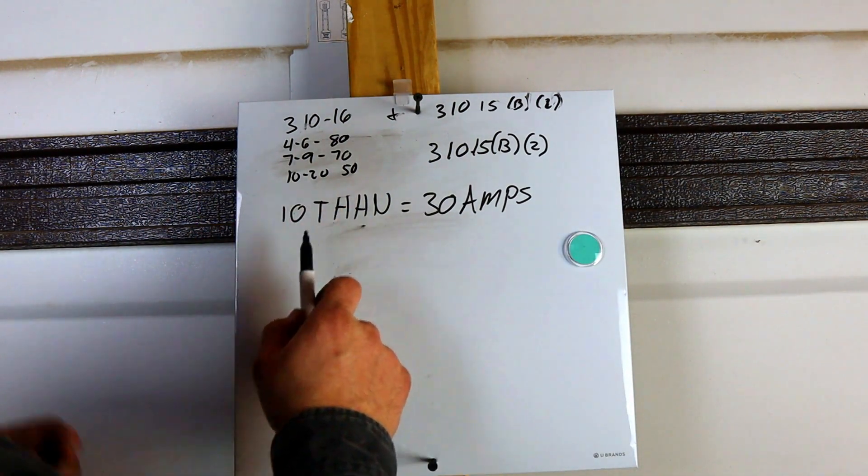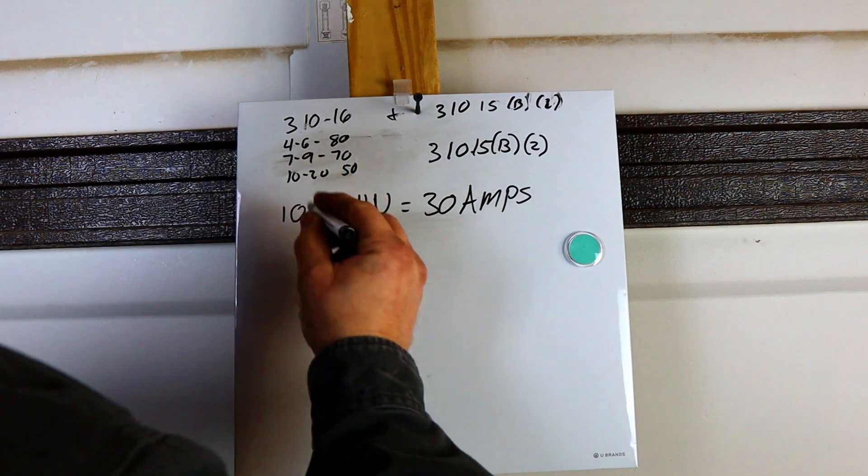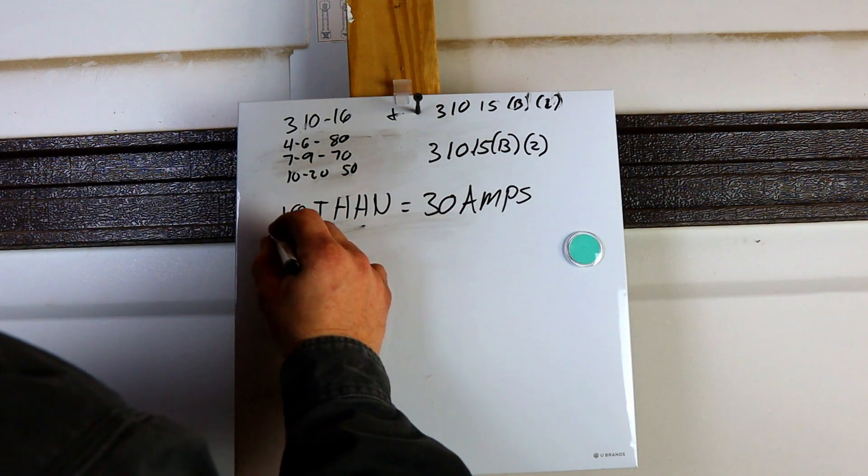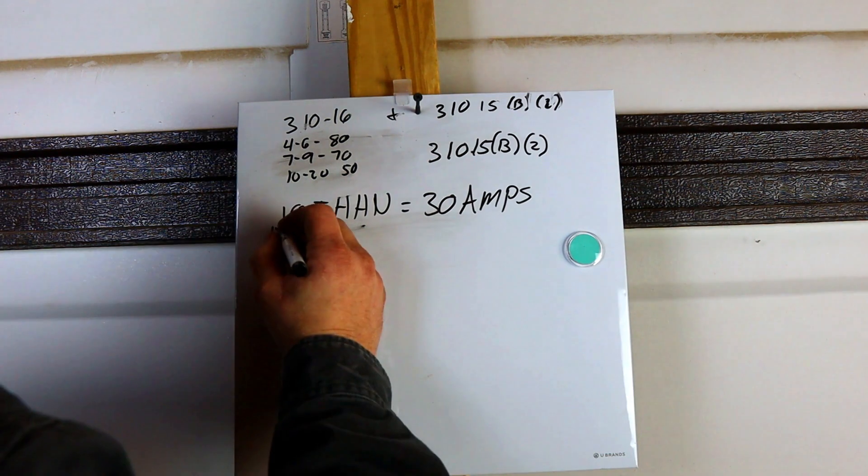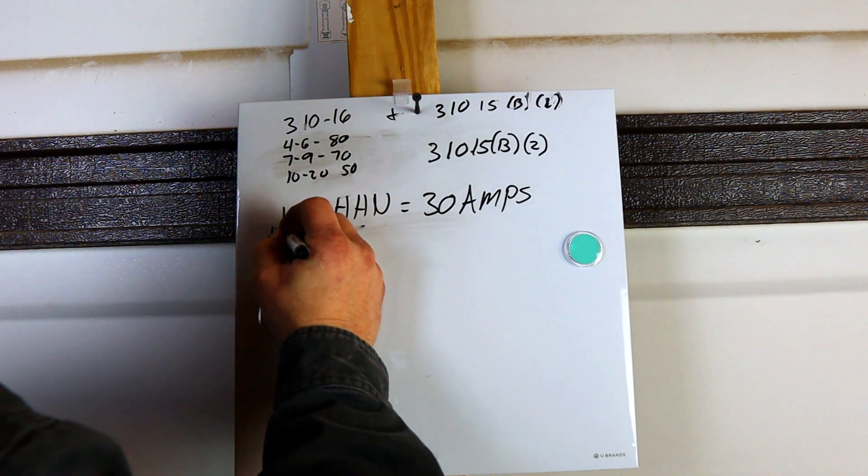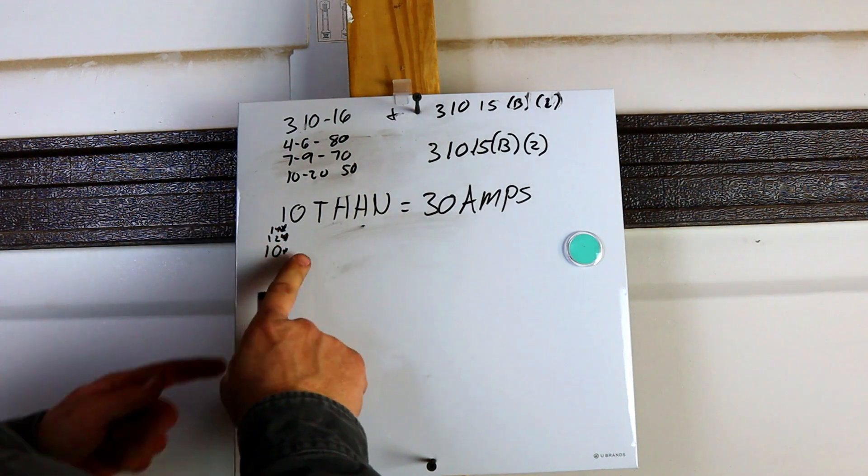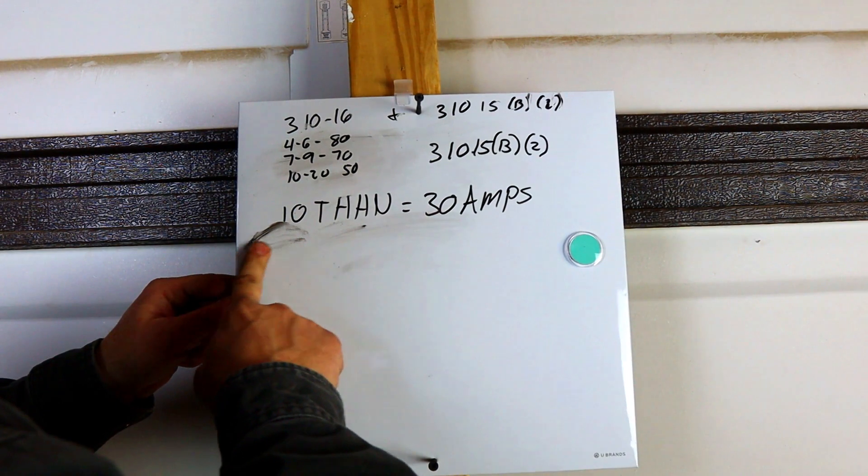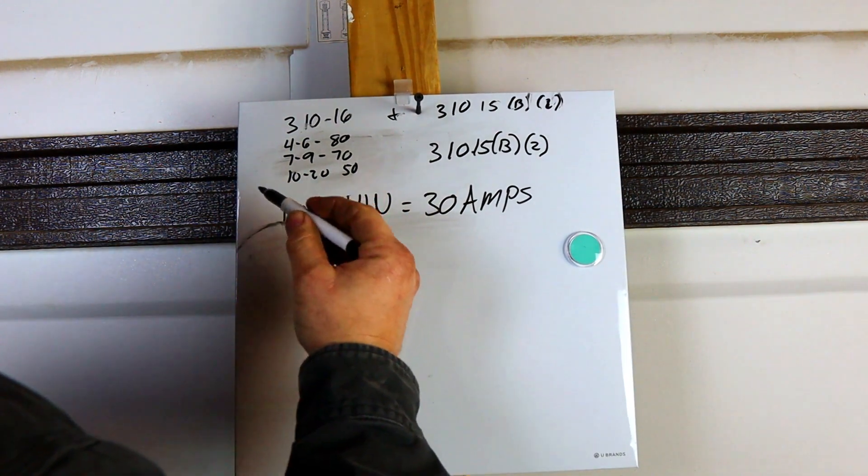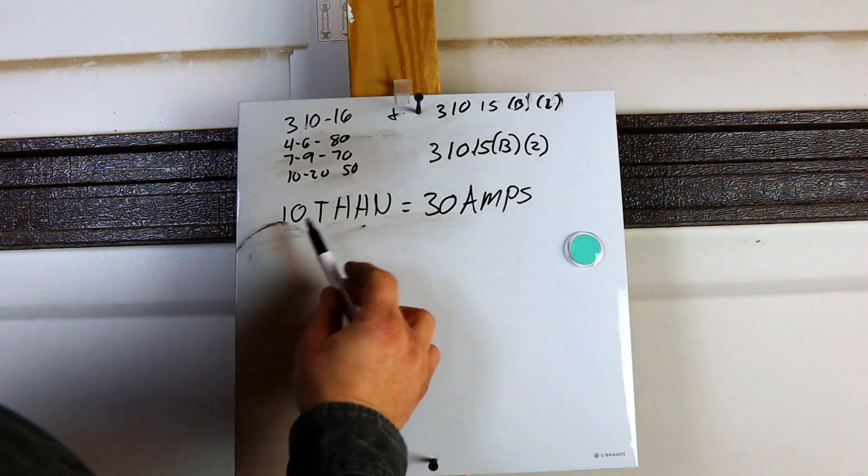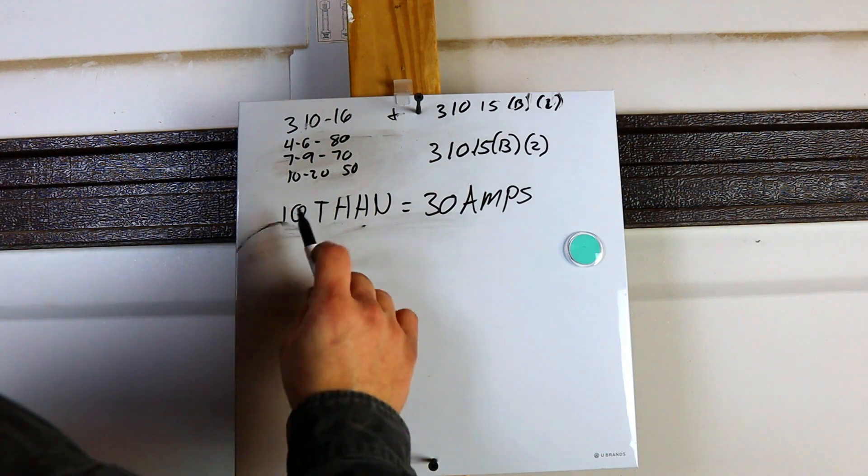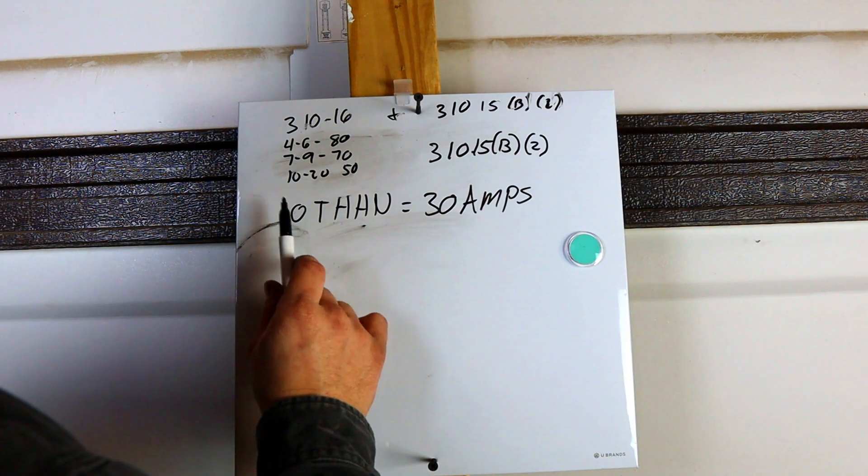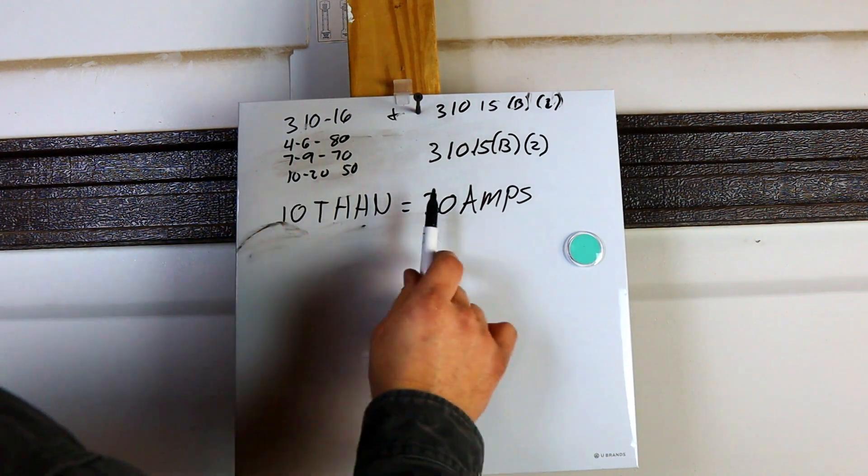All right. So we're going to be working with 10THHN. Now, if you see in the codebook, it does say it has a 10, a 12, and a 14, and it has a little asterisk beside of it. And it references you to go back to a different part of the code, which is 240-4D. And that tells you that basically 12-gauge wire is good for 20, 14 is good for 15, and 10 is good for 30. So that's what we're sticking with. You need to make sure you know what insulation you're working with. For me, I'm working with 10.